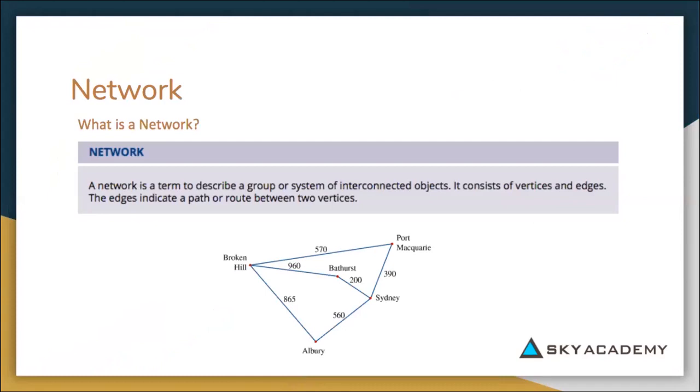Well, a network is simply a diagram that connects multiple things. For example, below down here we are connecting multiple places. We are connecting Broken Hill to Port Macquarie, Port Macquarie to Sydney. So it's just a diagram that connects multiple places.